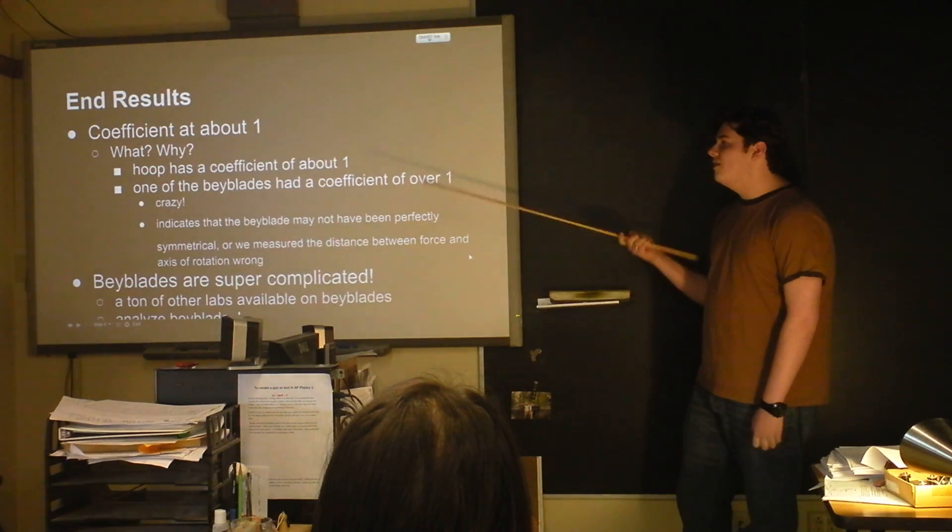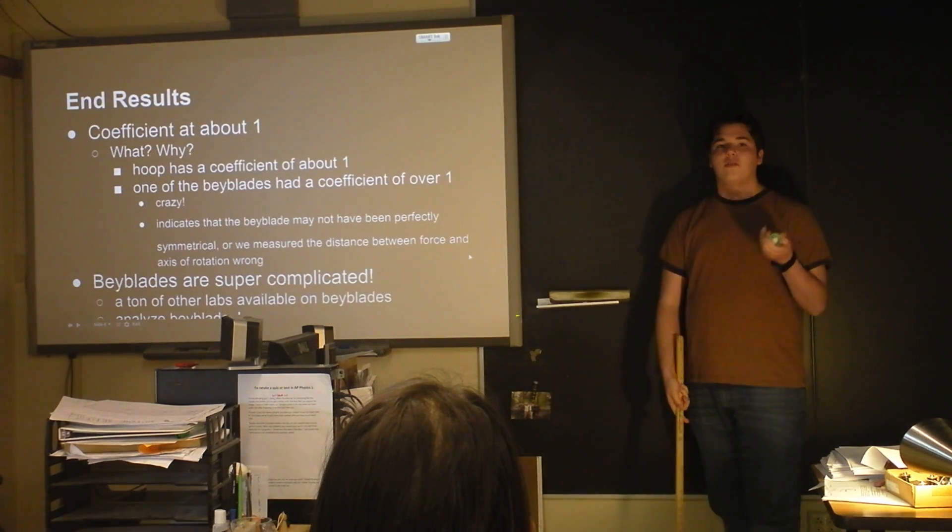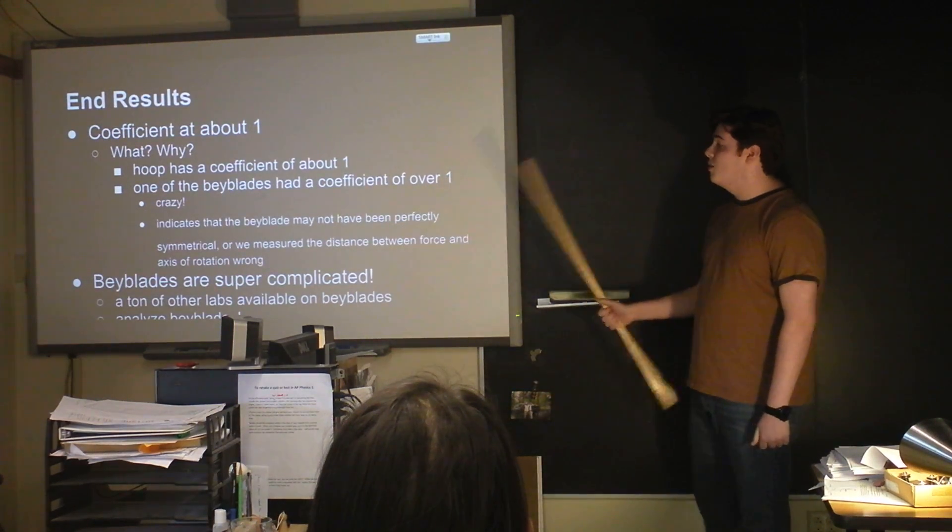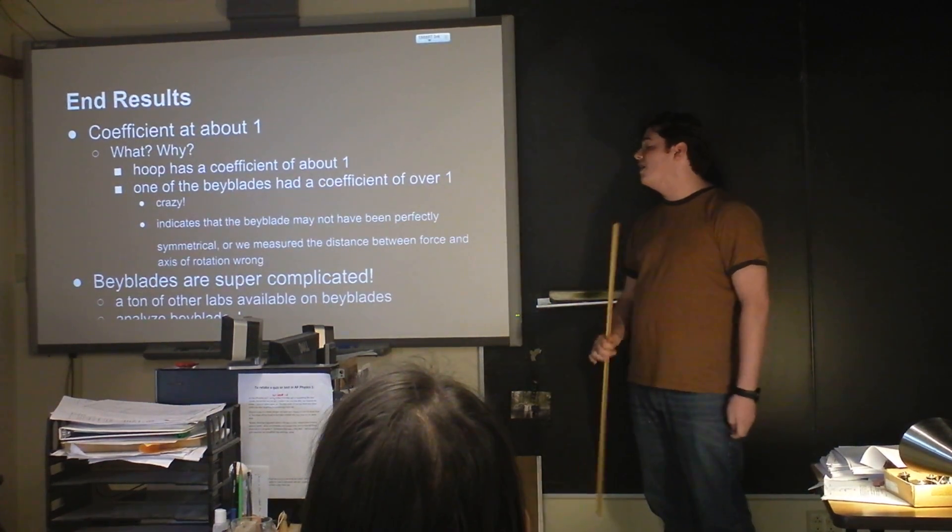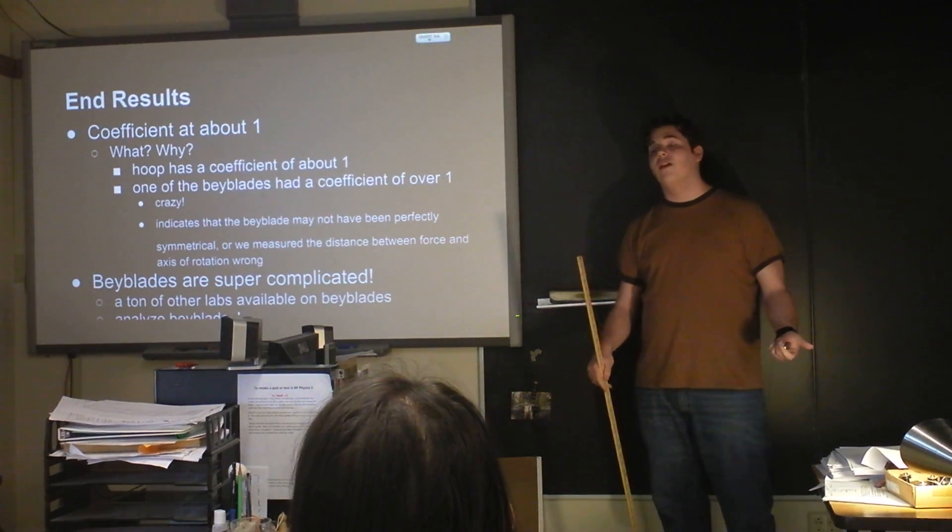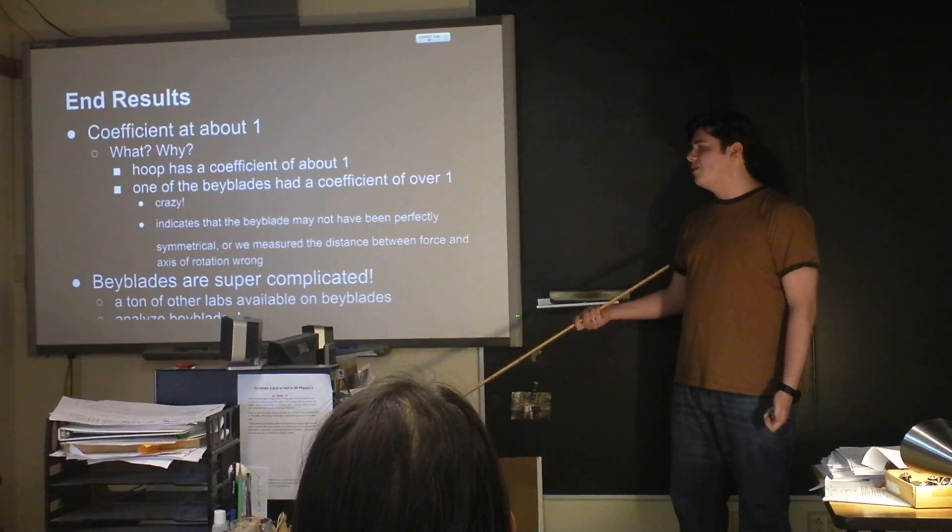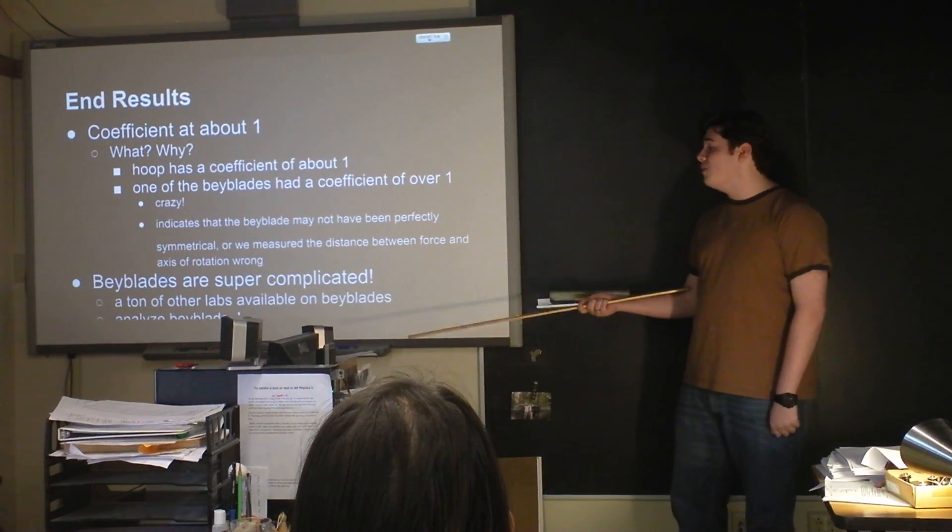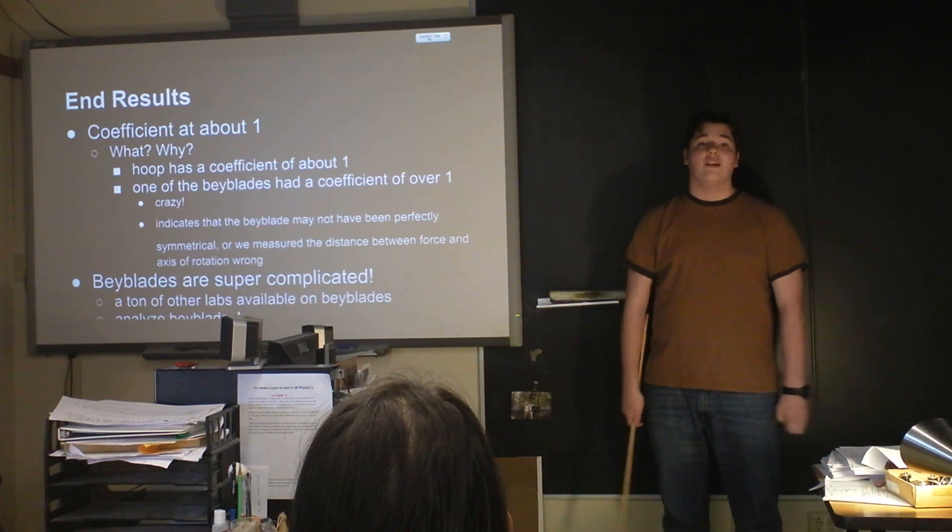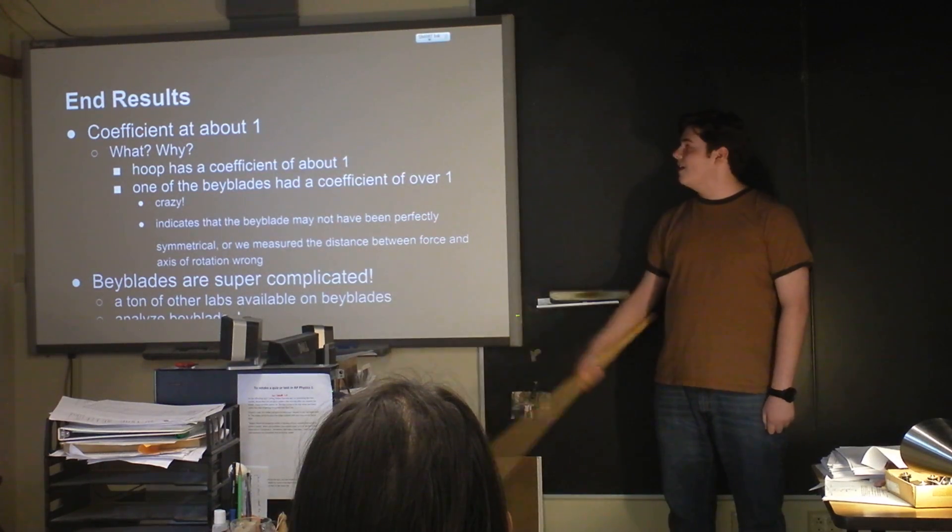In result, the coefficient's about 1. That's because of the mass distribution being mostly in this little metal ring. We probably, they might be perfectly symmetrical. We may have measured the wrong radius. We don't know exactly where that came from, but we have a pretty good idea that we got a pretty good job on the thing. So Beyblades are super complicated. There's a lot of stuff you could do on them, and they're really well made, actually. So, that's all I have.